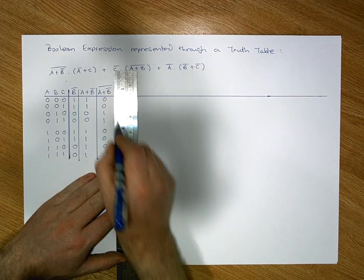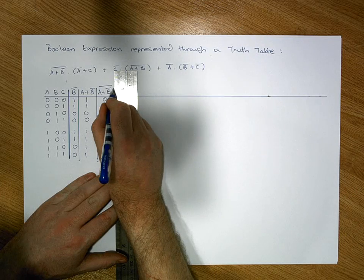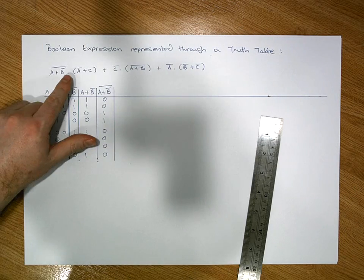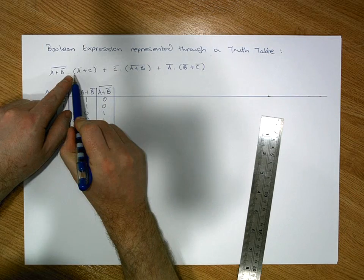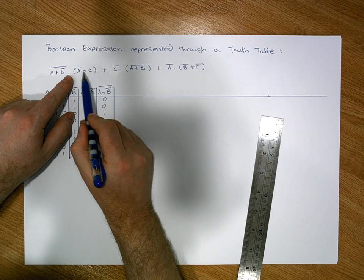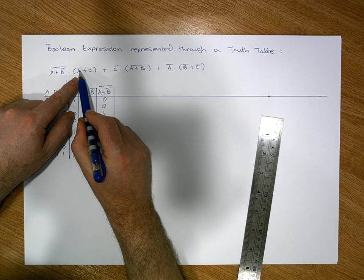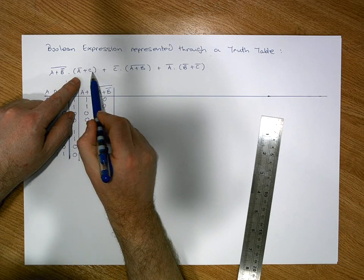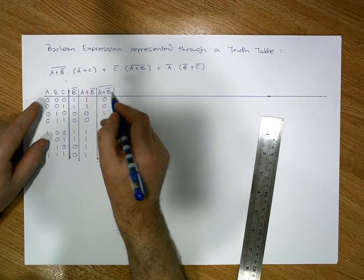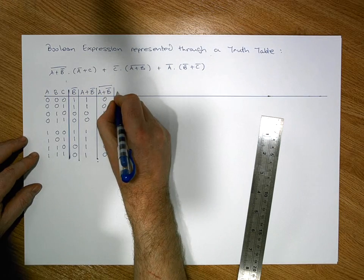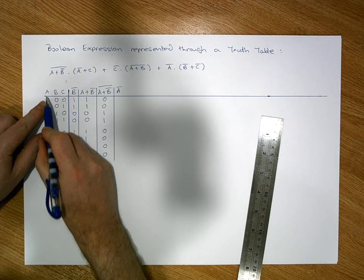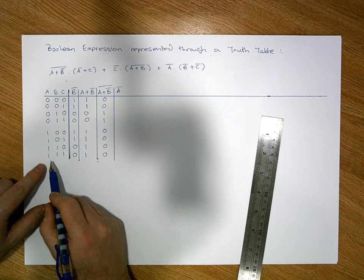Now we need the right-hand operand for this AND. The bracket says we negate A, then OR with C. So before doing the OR we must have the negated A values. Let's create an Ā column — the A column values negated.